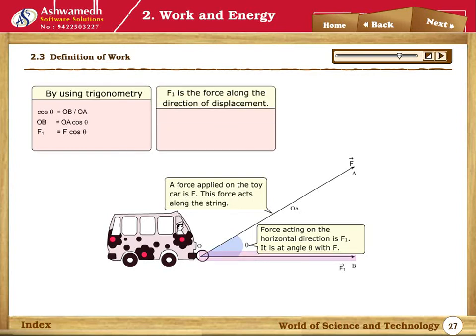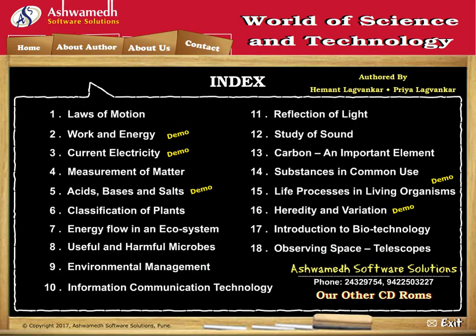F1 is the force along the direction of the displacement. Work done is equal to F1 into S, which is equal to F cos theta into S, which is equal to F S cos theta.